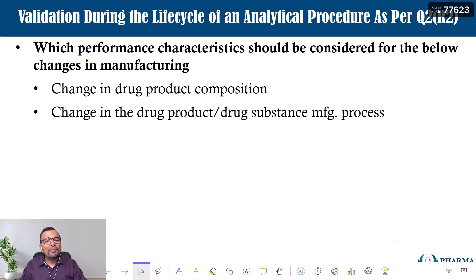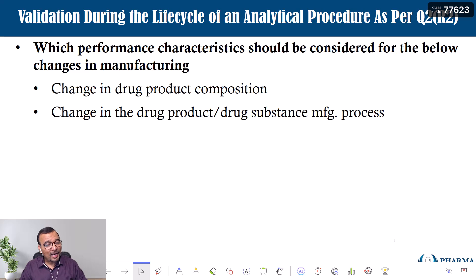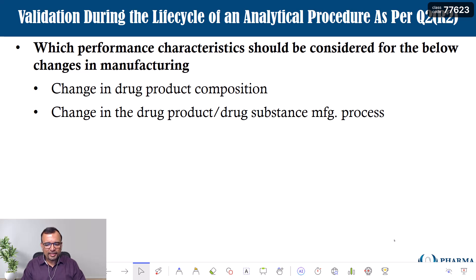In this video we are going to talk about change in the drug product or drug substance manufacturing process. What does change in the manufacturing process mean? For a drug product like a tablet, it could mean changing from wet granulation to dry compression or direct compression. The question is: what is the change and how is it going to impact your analytical procedure? What characteristics of the drug product can get influenced or changed, and what is the influence on your testing procedure? That has to be evaluated as part of your risk assessment, and based on that you will raise the change control for conducting partial validation. The same applies for drug substance — you may be changing the manufacturing process, for example a change in temperature.